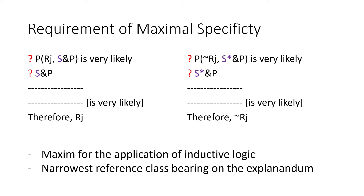This holds for the epistemic formulation of the problem — where we don't know which premises are actually true — but it also holds for the more general formulation where we do know our premises are true. It is still the case that both arguments consist of true premises, but one of the two will violate the rationality requirement for the usage of inductive statistical explanations, and therefore is not an explanation we should rely on. We have a rational reason to prefer the usage of the other argument.